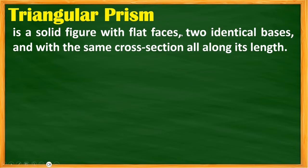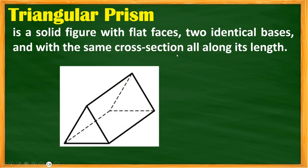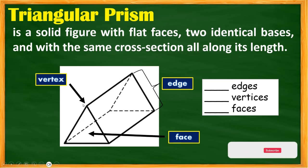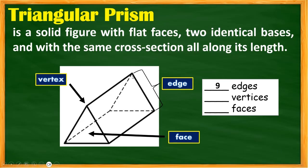A triangular prism is a solid figure with two identical triangular bases and the same cross-section along its length. Let's identify its properties. Counting the edges: 1, 2, 3, 4, 5, 6, 7, 8, 9 — so it has 9 edges. The vertices are: 1, 2, 3, 4, 5, 6 — so 6 vertices. The faces are the two bases plus three sides, giving 5 faces.